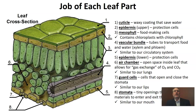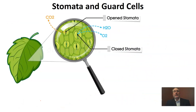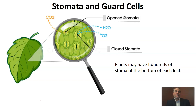Let's take a closer look at the stomata and guard cells. On terrestrial or land plants, you're going to always find that the stomata — those openings — are on the bottom of the leaves. For water plants like lilies, we typically find the stomata on top of the leaves. Depending on the type or species of plant, some plants may have hundreds of stomata on the bottom of their leaves while others may have thousands.